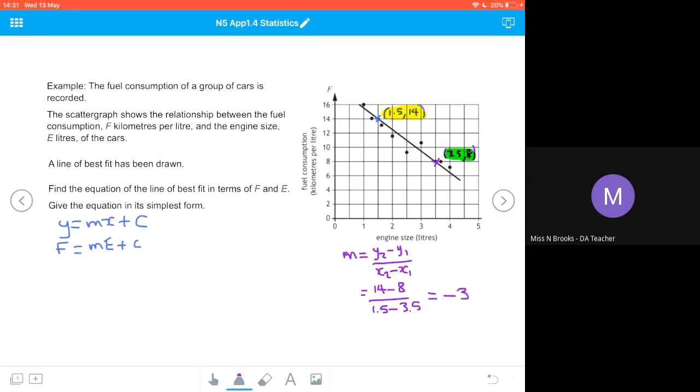We substitute the gradient with one of our points into our equation. We have 14 equals negative 3 times 1.5 plus c, which gives us 14 equals negative 4.5 plus c. Adding 4.5 to both sides gives c equals 18.5. The last step is to write our equation in terms of f and e, substituting our gradient and y-intercept values: f equals negative 3e plus 18.5.